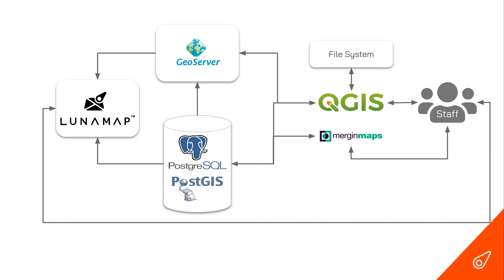LunaMap is great for staff — quickly log in, see all your layers, search for a specific project area. For non-GIS users it's especially helpful. It's also good for clients or project participants who should be able to see data as it's being collected. Users can log in securely with permission-controlled access to the layers they're allowed to view. This is how we set things up — when we talk about setting up different databases, we're talking about within the PostgreSQL server.